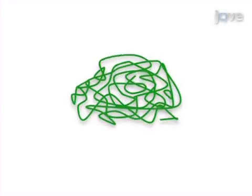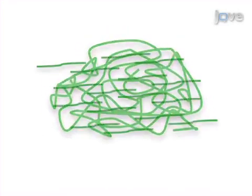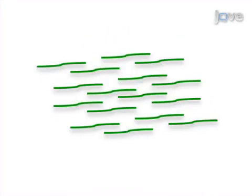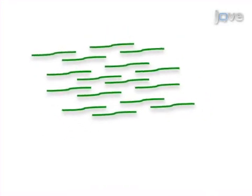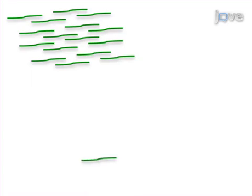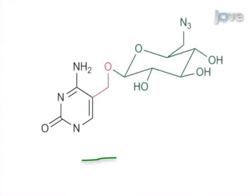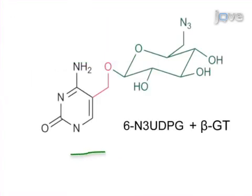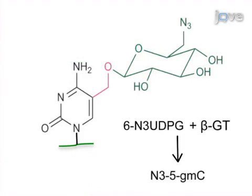First, fragment the genomic DNA by sonication. Then, perform a beta-glucosyltransferase reaction to transfer azide glucose moieties to 5-hydroxymethylcytosine residues on the DNA.